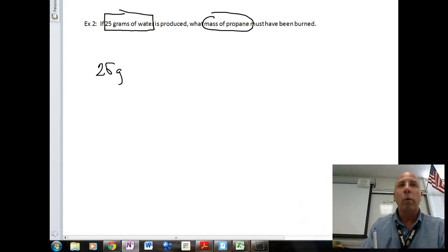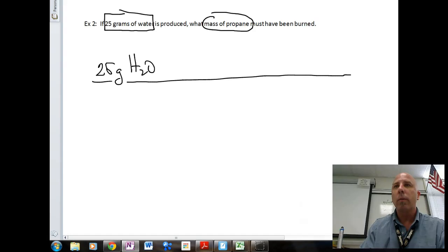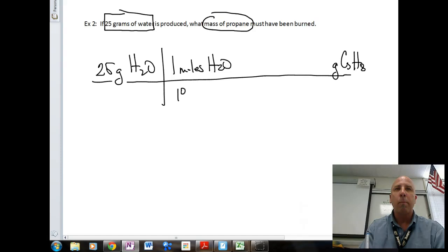Our known here is going to be 25 grams of water. And we're looking for grams of C3H8. So we're going to use dimensional analysis to go from one place to another. We'll start off, we want to convert to moles of water first. And so we're going to divide by the molar mass of water, 18.02, two hydrogens plus one oxygen.